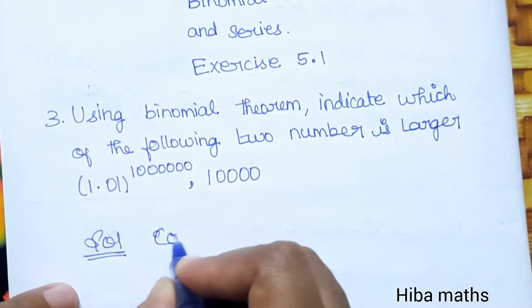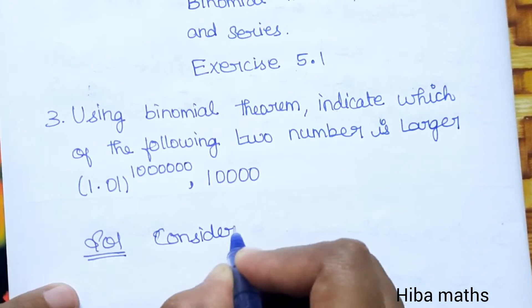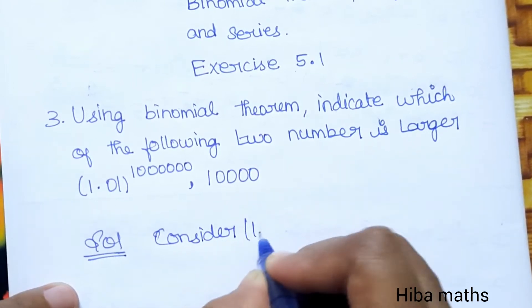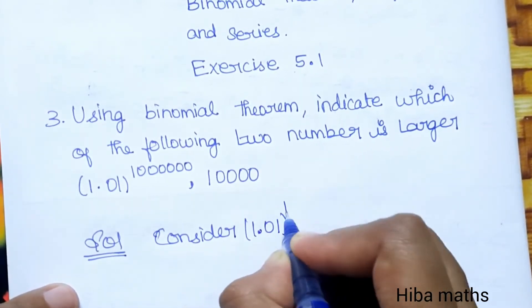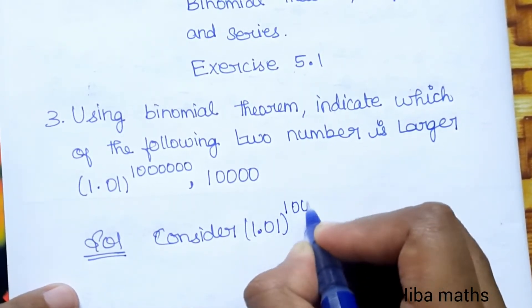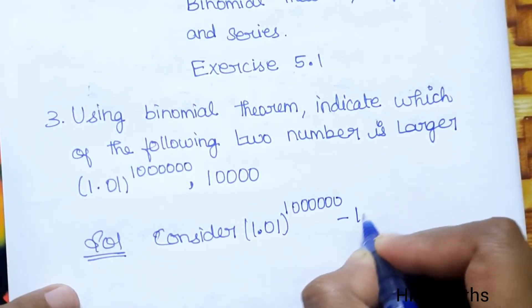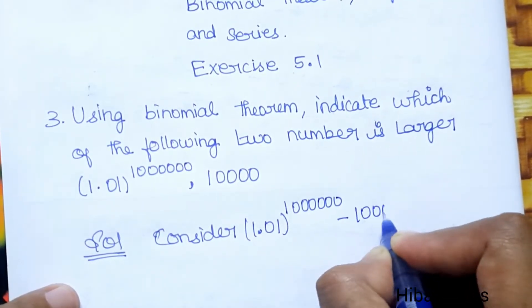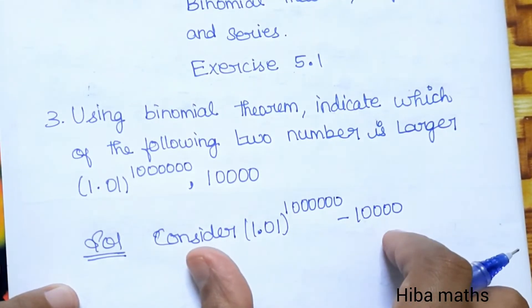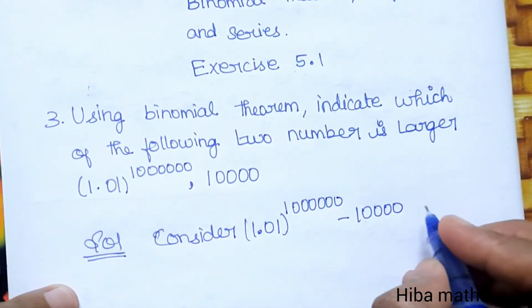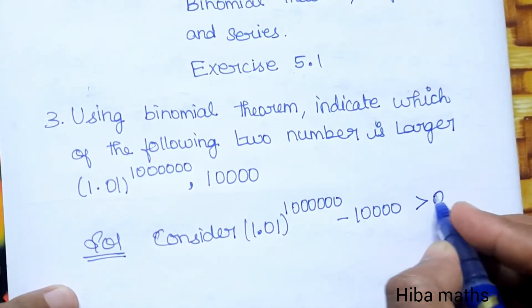In the solution, consider 1.01 power 1000000 minus 10,000. Now we have to use this concept — show it is greater than 0.